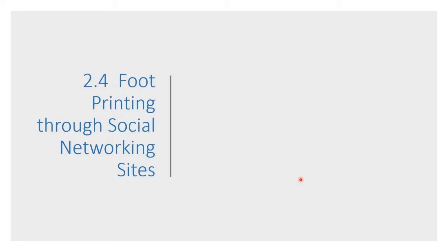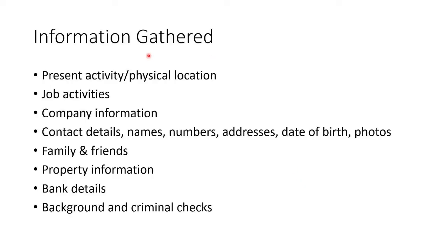We can do a lot of footprinting with social networking. What can we get from social networking? Physical location, their present activities, their job activities, company info, contact details, names, numbers, addresses, date of birth, photos, families and friends, property information, banking details, even background and criminal checks.